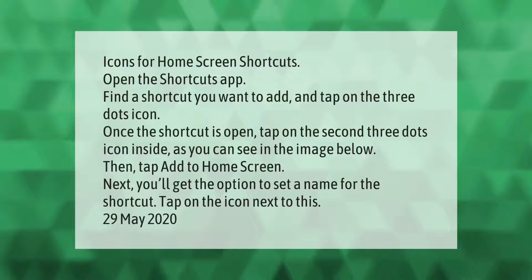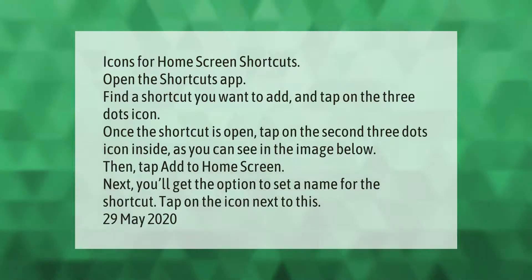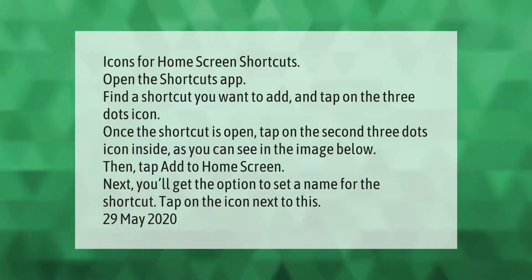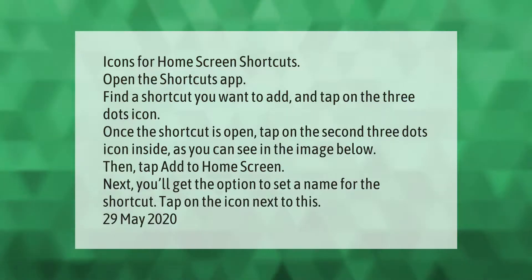To add icons for home screen shortcuts, open the Shortcuts app and find a shortcut you want to add. Tap on the three dots icon. Once the shortcut is open, tap on the second three dots icon inside — as shown in the image. Then tap Add to Home Screen. Next, you'll get the option to set a name for the shortcut. Tap on the icon next to this.